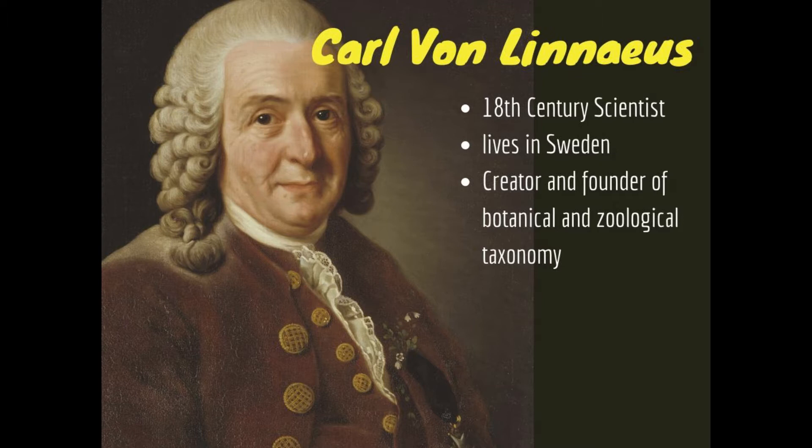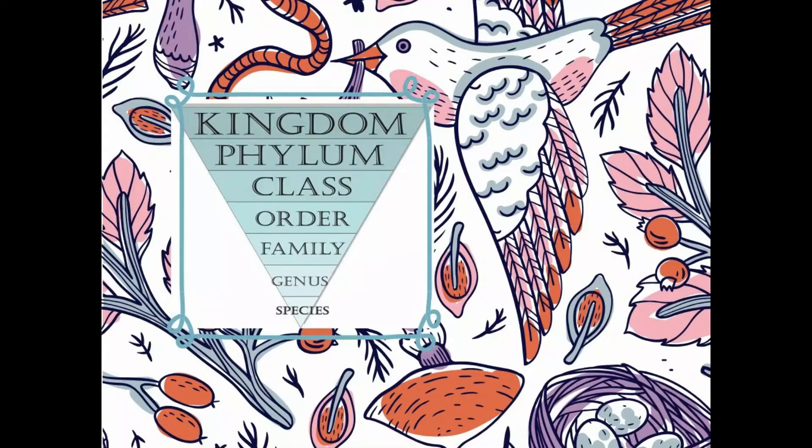What is he best known for? Well, have you ever had to decide the difference between two different types of frogs? He is the person who helped organize all the different types of biology that we have in the world — a system we use even today. Carl von Linnaeus was an 18th-century scientist who lived in Sweden, and he was the creator and founder of botanical and zoological taxonomy — the way we organize all different types of biology. This organization system starts out broad and gets more specific as you go through the classification.